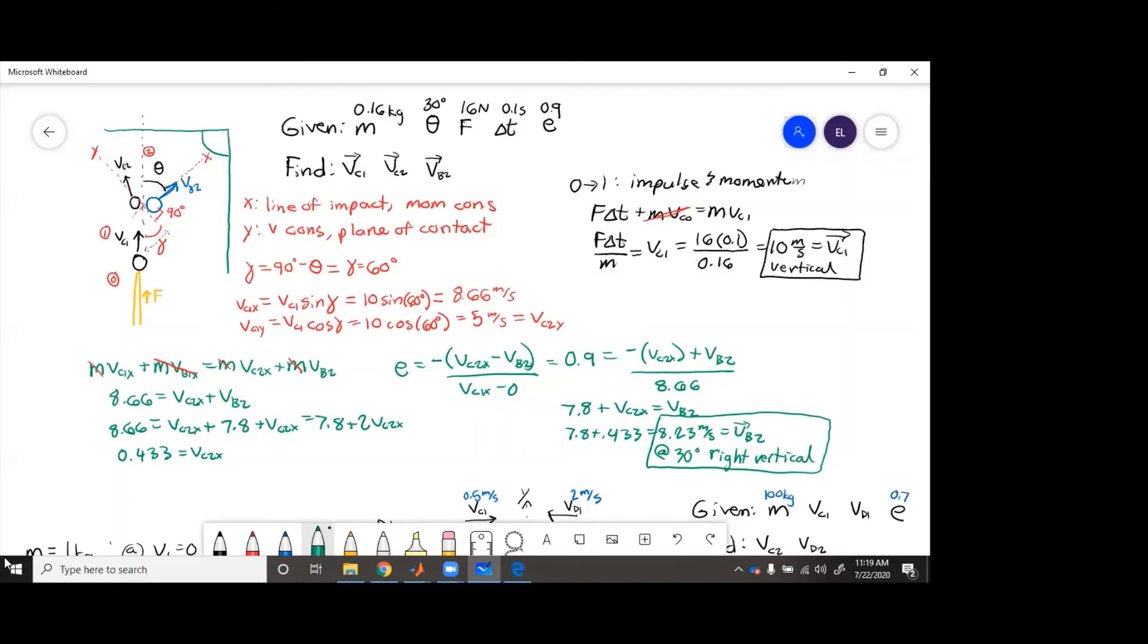This is vb2. Now vc2, we have to take the y component and the x component. So vc2 equals square root of 5 squared plus 0.433 squared equals 5.02 meters per second.